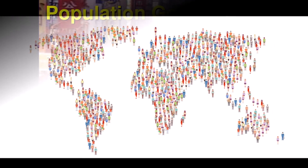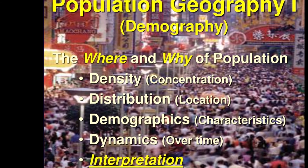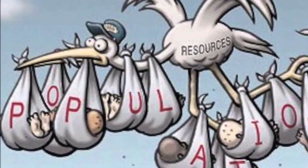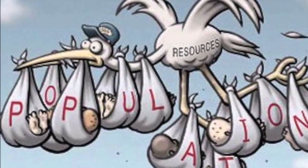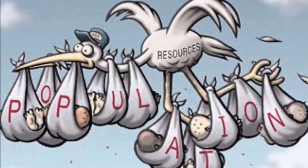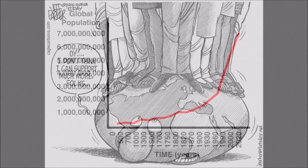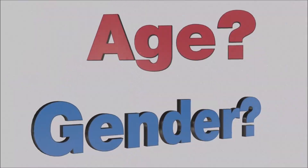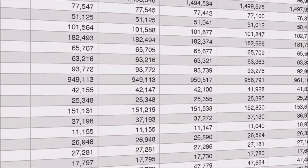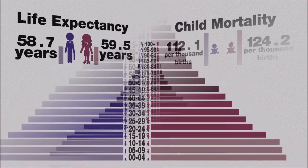Population geography is a division of human geography that focuses on the study of people — their spatial distributions, their characteristics, and their density. It is the study of spatial variations in births, deaths, and distribution, as well as the composition, migration, and growth of populations from one place to another. Population geographers seek to understand the structure of the population and how populations may change through movements and processes.